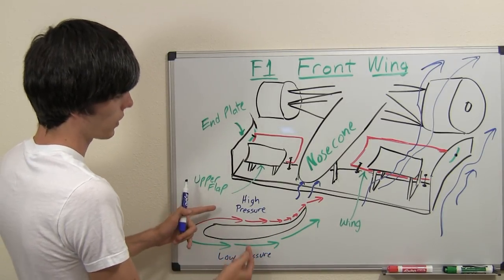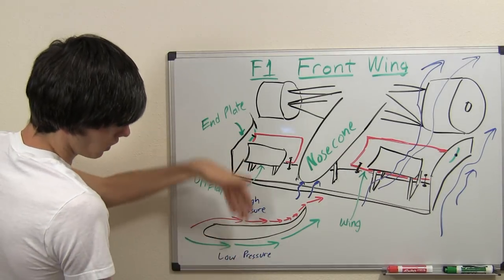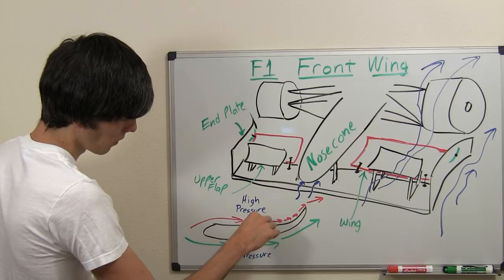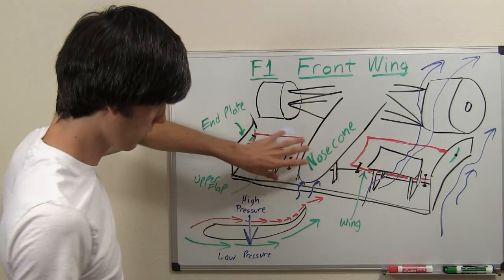So you've got low pressure on the bottom, high pressure on the top. What's the difference? That's what's going to push down. So you'll ultimately have a force in the downward direction, and that'll be the goal of these wings, especially the adjustable ones.